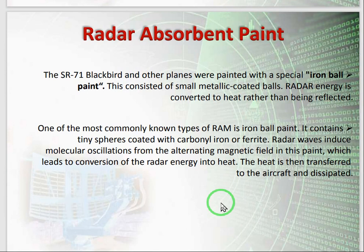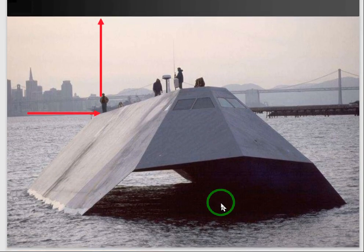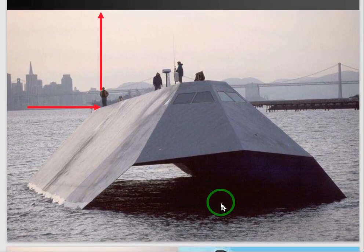The fourth stealth technology criterion is the radar absorbent paint. It is a special paint designed to minimize the reflection of the signal, using the technique that the paint absorbs the frequency of the radar signal and converts it into heat rather than being reflected. That special paint absorbs the energy and converts it into heat energy. These are the four parameters to consider when building a stealth plane.